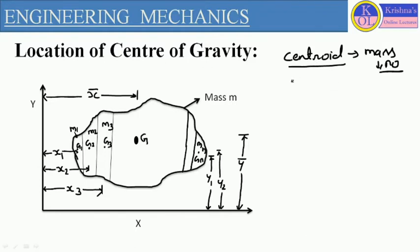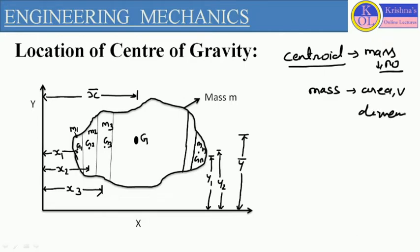Now, we talk about the center of gravity. Center of gravity we consider the center point of any object or any body which has mass as well as area, volume, and dimension — everything with mass. So in centroid we don't consider mass, but for center of gravity the body has area, volume, dimension, and mass.